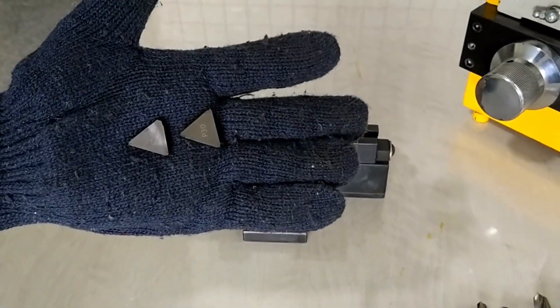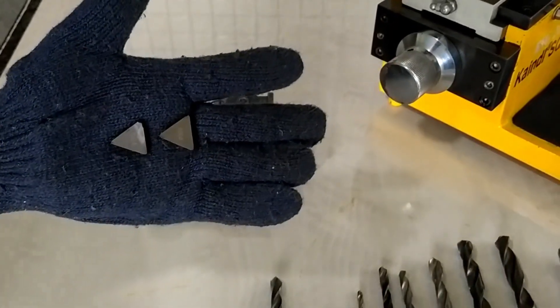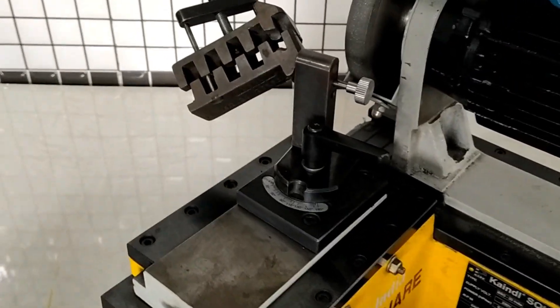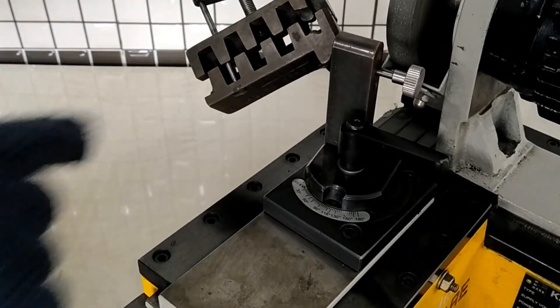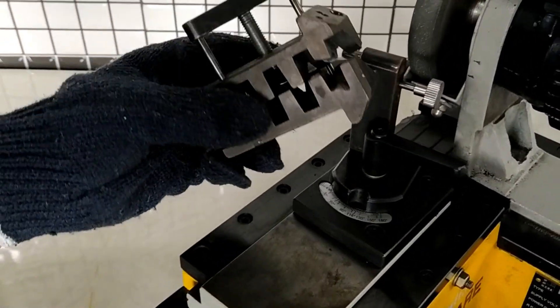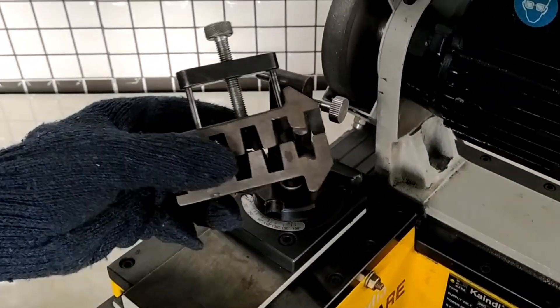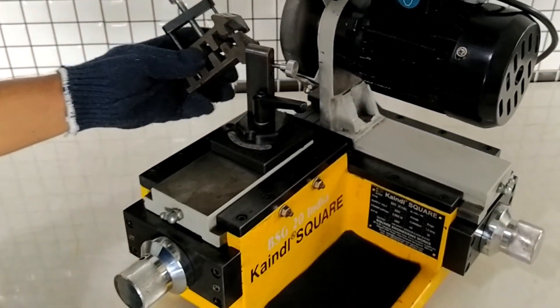The USP of this machine is we can maintain accurate angles because we are using fast and easy handling approved patented reversing prism system that guarantees the highest possible accuracy. Also there is no need for skilled operators to use this machine. Anyone with basic toolroom equipment knowledge can use this machine.